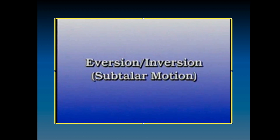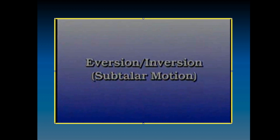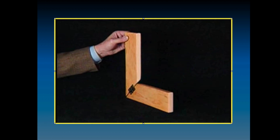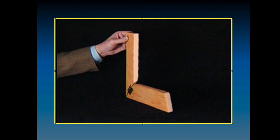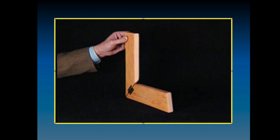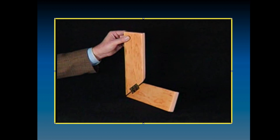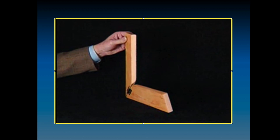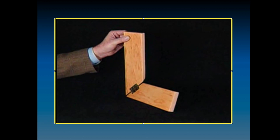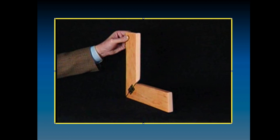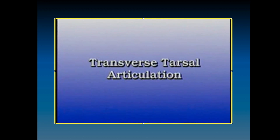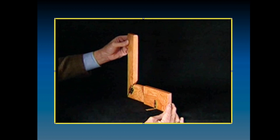The axis of rotation of the subtalar joint is close to 45 degrees from the horizontal. Thus, internal rotation of the tibia is directly linked to subtalar eversion, and external rotation occurs with inversion as demonstrated here. The transverse tarsal articulation, consisting of the talonavicular and calcaneal cuboid joints, allows subtalar motion while the forefoot remains fixed on the ground.